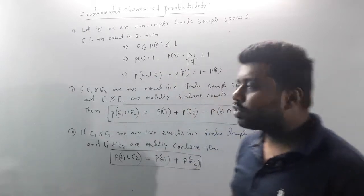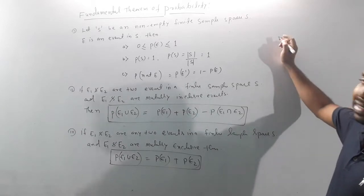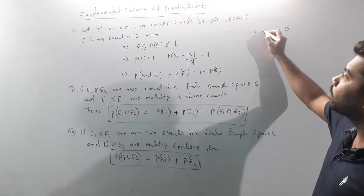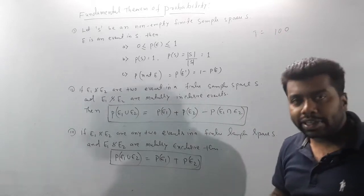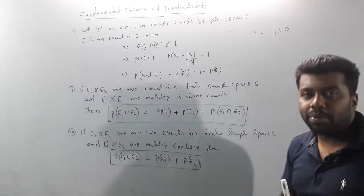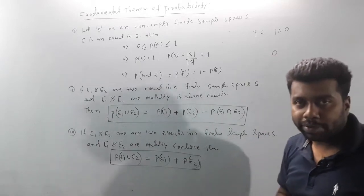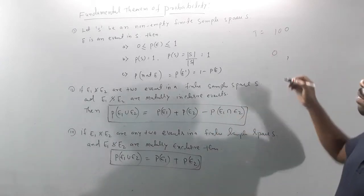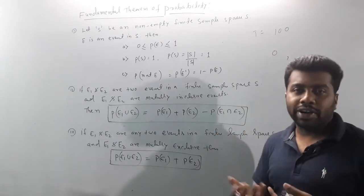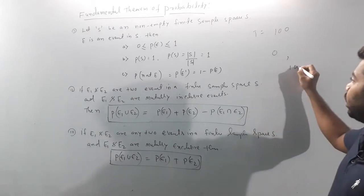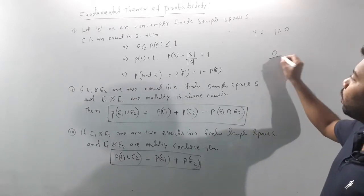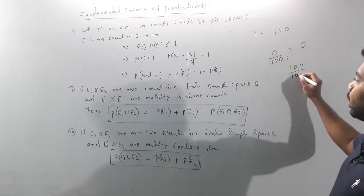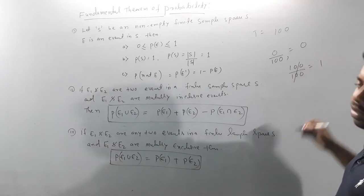Let me give you a small example. If you take an exam, what does your total mark mean? It's 100. The minimum score you can get is 0, and the maximum you can get is 100 out of 100. So I will put 100 as maximum, I will put 0 as minimum. So the minimum is 0 by 100, which equals 0, and the maximum is 100 by 100, which equals 1.